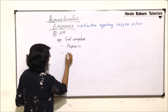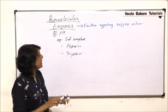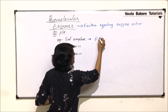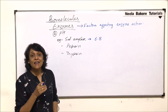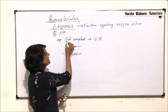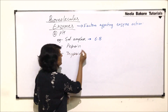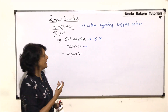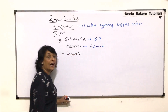The second example is pepsin and the third is trypsin. All these enzymes have their optimum pH. Salivary amylase has its optimum pH as 6.8 — that means slightly below neutral, or slightly acidic. This pH is available in our saliva, that's why this enzyme gets that optimum pH and works at its best efficiency. Pepsin works in the stomach where hydrochloric acid creates an acidic pH, and its optimum pH is 1.2 to 1.8 — highly acidic.